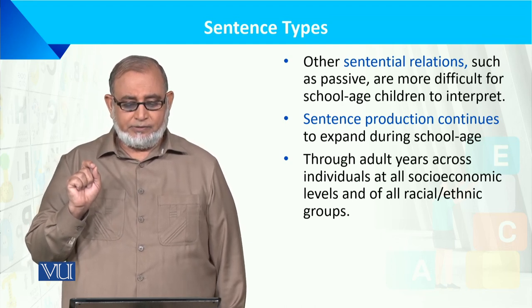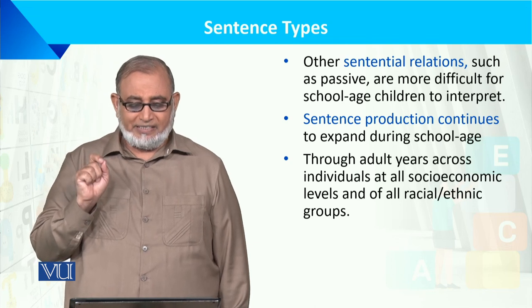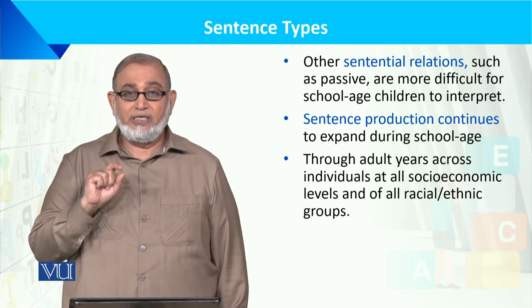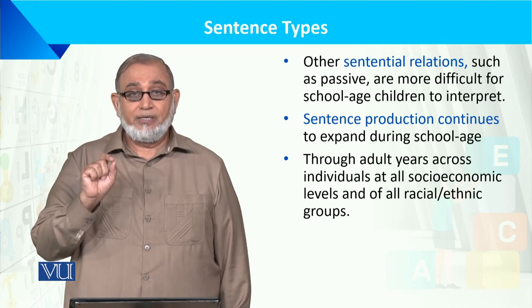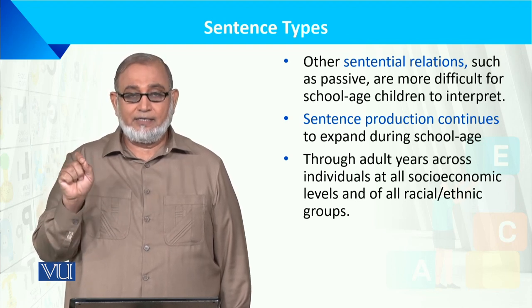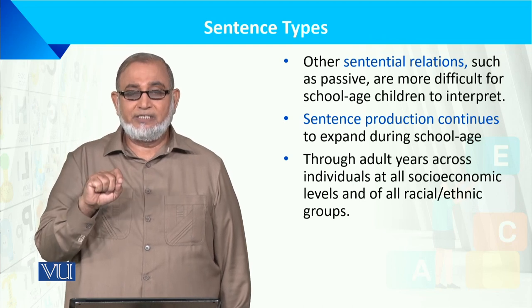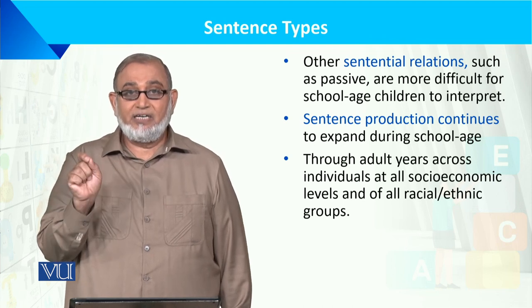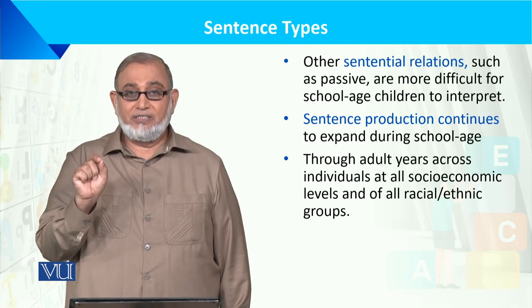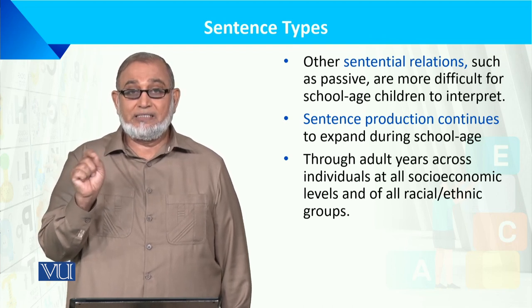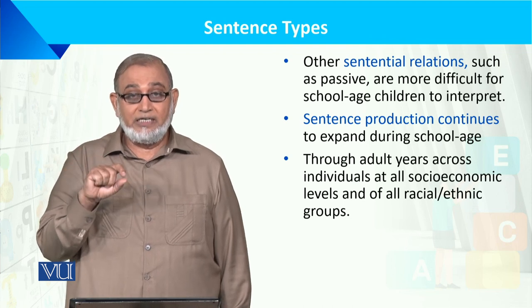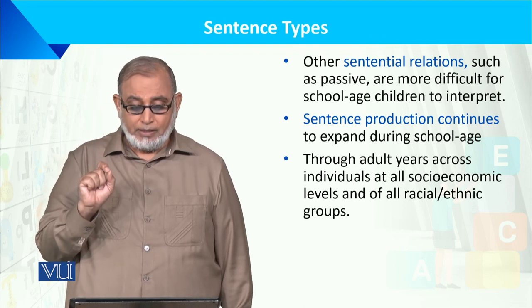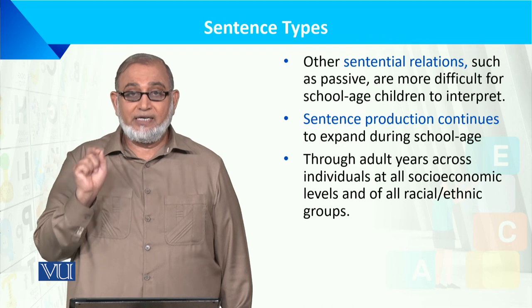Other relational structures such as passive sentences are more difficult for school-age children to understand. Active voice, such as 'Ali writes a letter,' is straightforward. The passive form — 'A letter is written by Ali' — is more complex. These children who are around ten years old are still developing this understanding, and sentence production continues to expand during the school-age years.